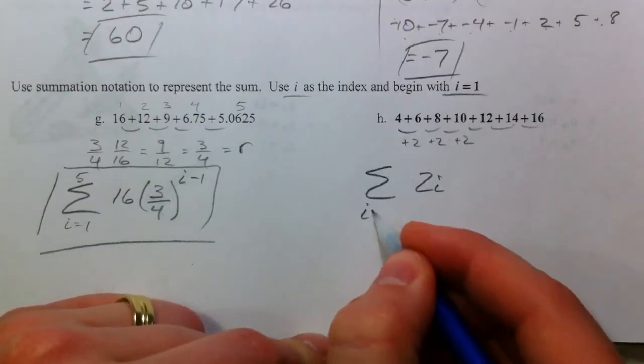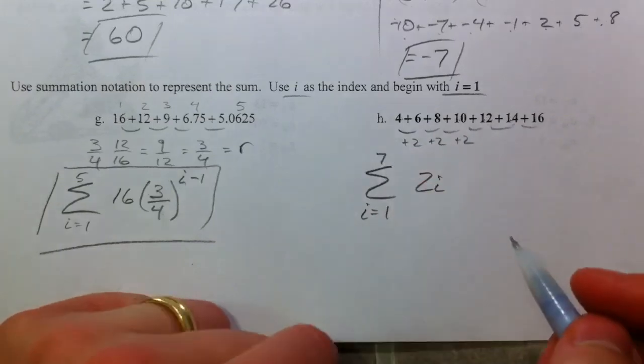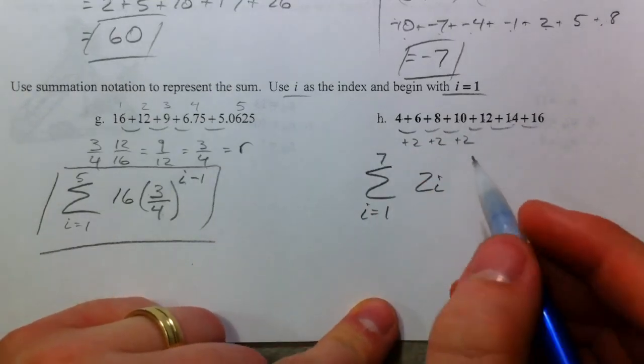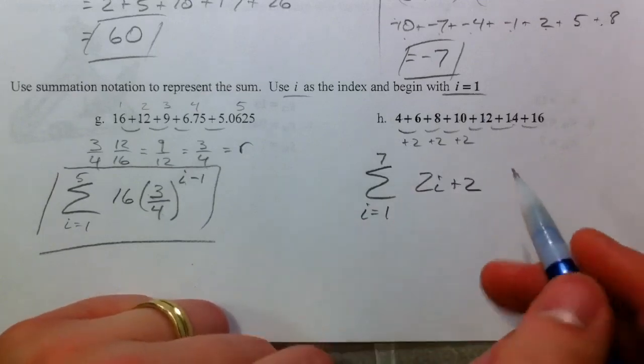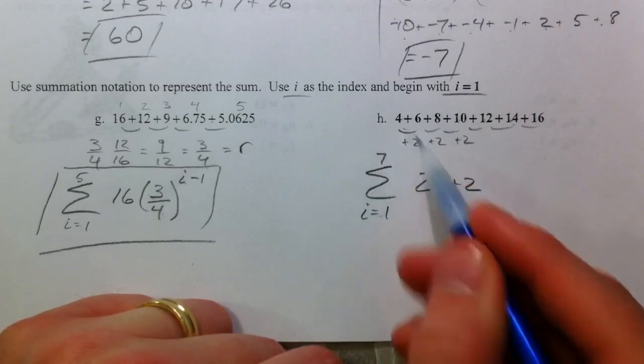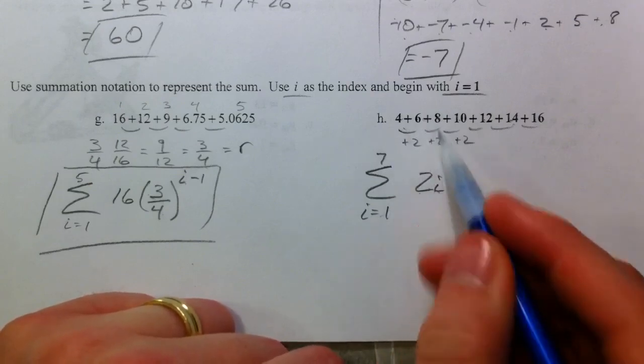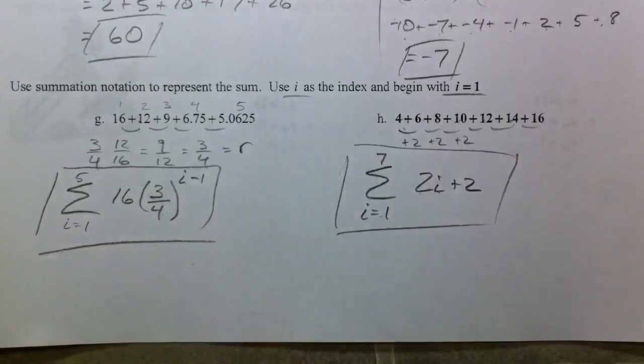We're going to start at I equals 1 and go through 1, 2, 3, 4, 5, 6, 7. We've got 7 terms. And we've got to add 2 to this. Because when you plug in 1, 2 times 1 is 2 plus 2 is 4. Plug in 2, you get 4 plus 2 is 6. And so, that is our sigma notation.